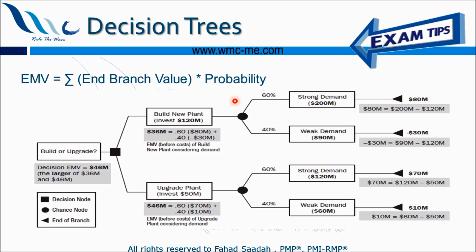By studying the market conditions, we found a 60% chance of strong demand and a 40% chance of weak demand for the product. This comes from the enterprise environmental factors, which are an input to performing quantitative risk analysis. Importantly, the market conditions — and therefore these probabilities — are the same for all choices, since they are based on the market, not on the option selected.